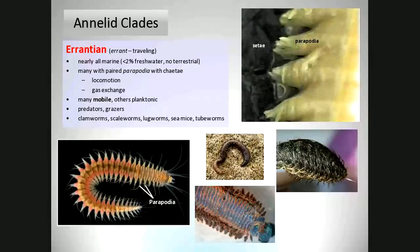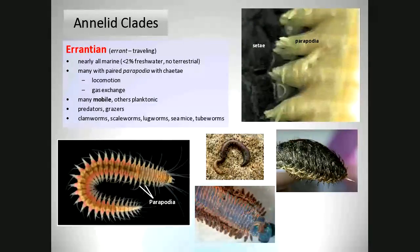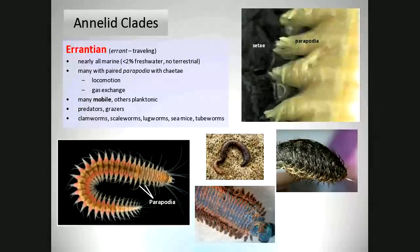The Errantian worms move much more efficiently than the other kind, which includes earthworms and leeches. Leeches don't move much at all — they're parasites. So the Errantian group is the moving group, while earthworms and leeches are more sedentary.